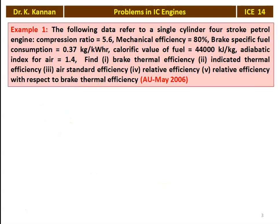We take example number 1 from the Anna University question paper. The first question is from the May 2006 question paper. The following data refer to a single cylinder 4-stroke petrol engine: compression ratio is 5.6, mechanical efficiency is 80%, brake specific fuel consumption is 0.37 kg/kWh, calorific value of the fuel is 44,000 kJ/kg, adiabatic index of air gamma is 1.4. Find the brake thermal efficiency, indicated thermal efficiency, air standard efficiency, and relative efficiency.